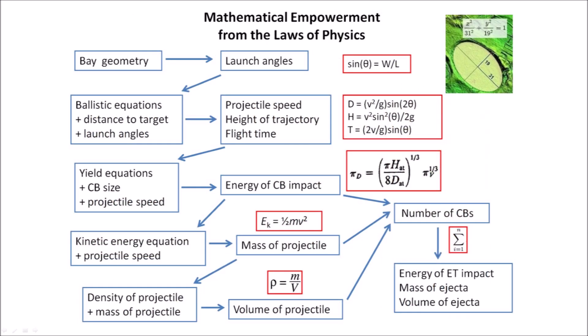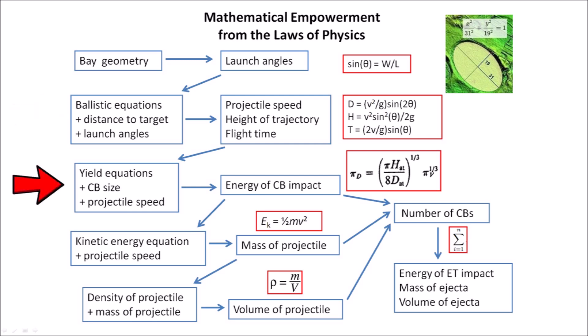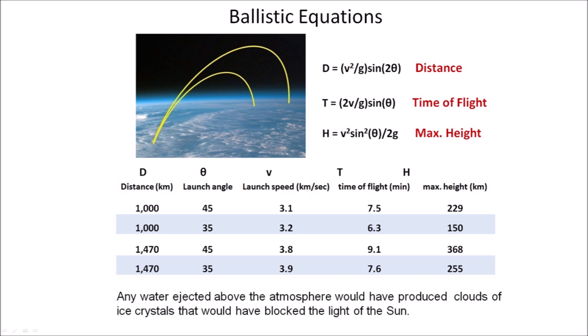The Glacier Ice Impact Hypothesis uses the laws of physics as the mathematical foundation for calculating the characteristics of the impact basins and the extraterrestrial impact. The conic sections representing the Carolina Bays and the convergence point near the Great Lakes provide the initial conditions for the physics-based model. The bay geometry provides launch and impact angles, and ballistic equations using the distance between the convergence point and each bay provide the speed, height, and flight time of the trajectories. The speeds required to launch ice projectiles from the Great Lakes region to the east coast vary from 3 to 4 km per second at angles of 35 to 45 degrees, with suborbital space flights reaching heights of 150 to 370 km and flight times of 6 to 9 minutes.